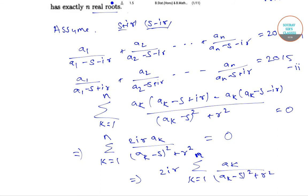Now this part is greater than 0 as the denominator is the sum of squares, so this is greater than 0.